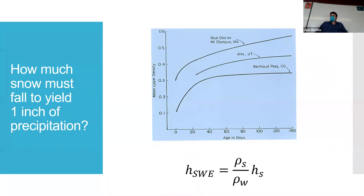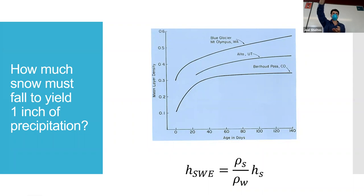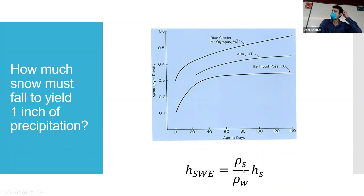The big equation we care about for snow is called snow water equivalent, or SWE. The depth of SWE — in inches or millimeters of water content — is related to the density of the snow: rho-s over the density of water, times the depth of the snow. So the ratio of snow density to water density times the snow depth. If you had a six-foot-deep snow column from a big snow event, how much water is actually in that snow? You need to know the density and the depth of the snow.